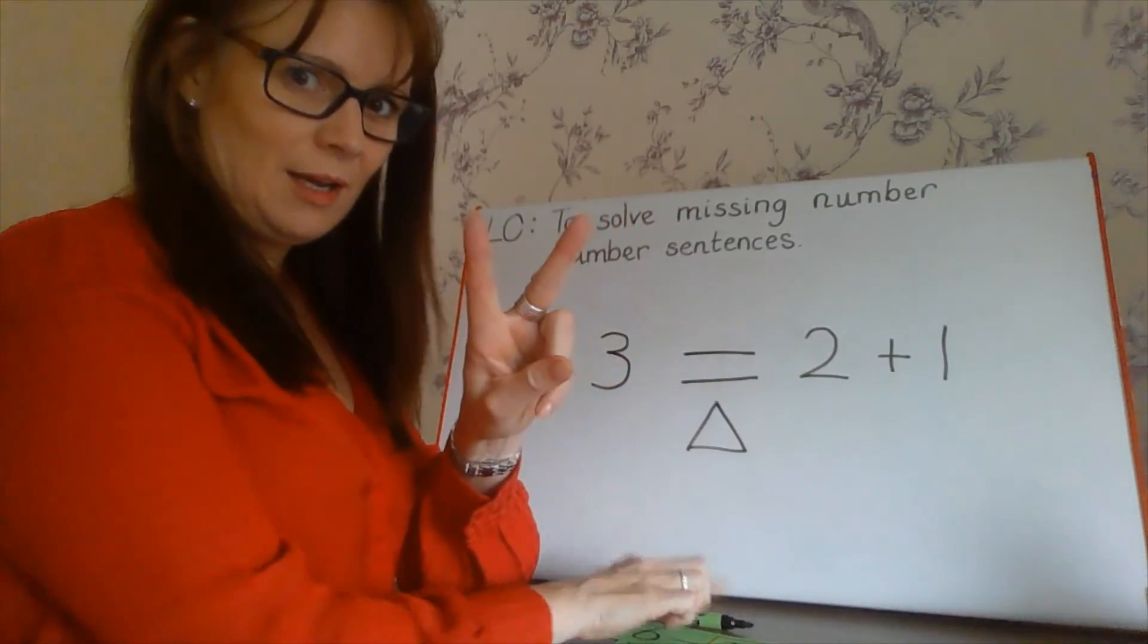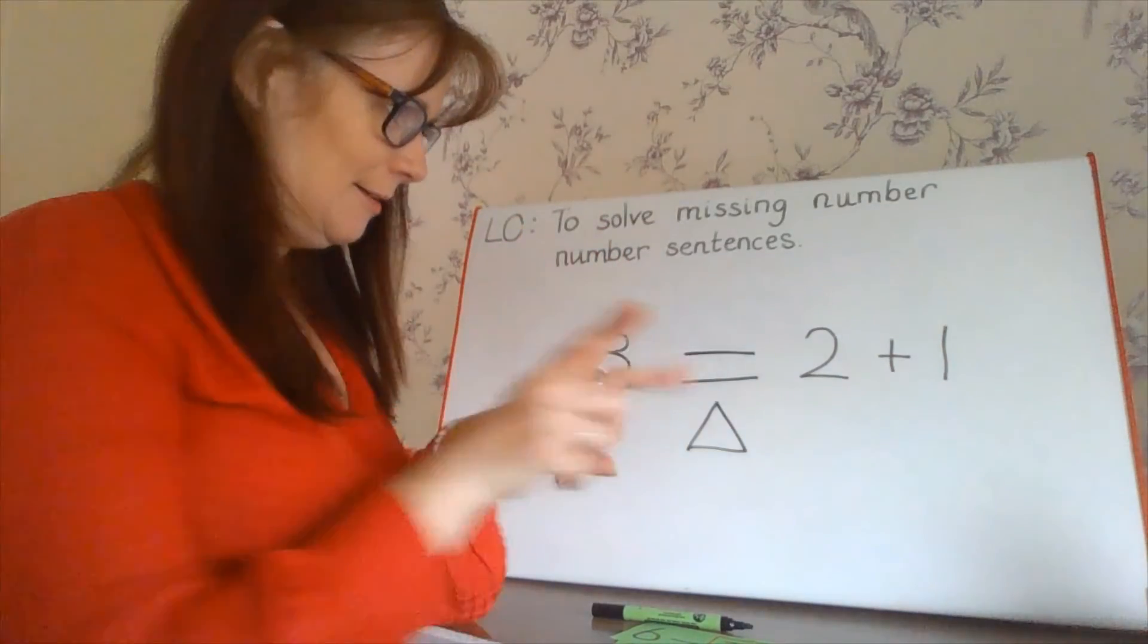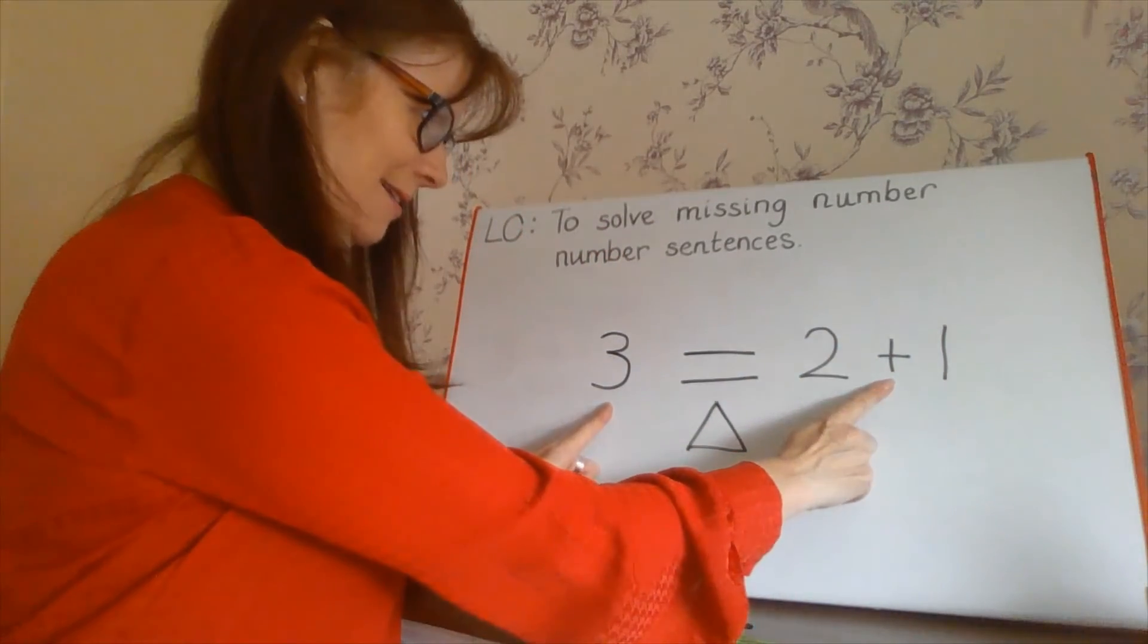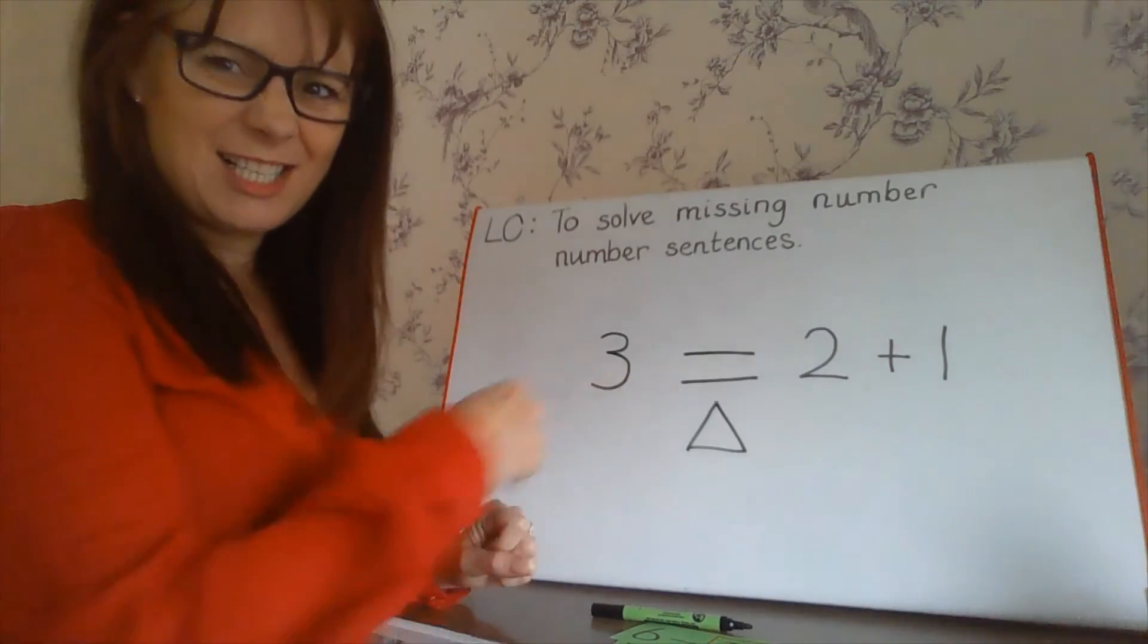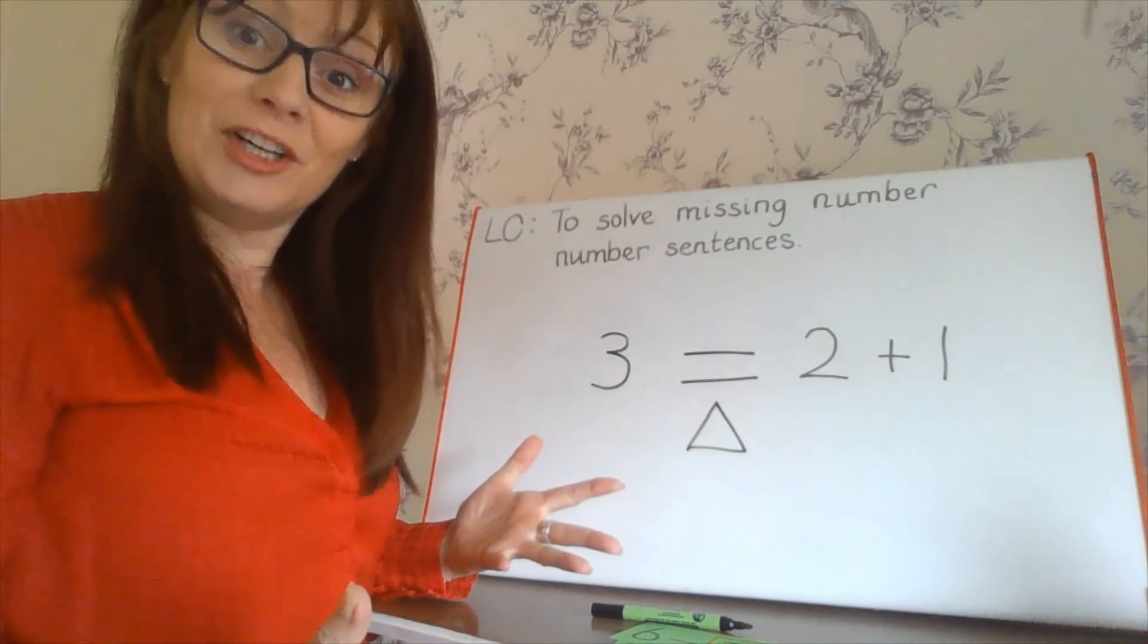Because we know that two add one is three. And that's three. So it's the same. But that number sentence looks a bit backwards, but it still works.